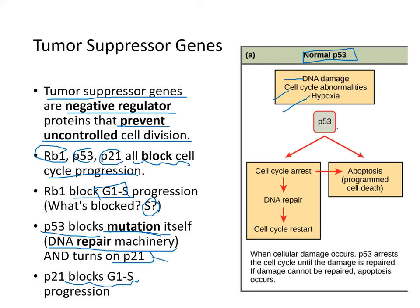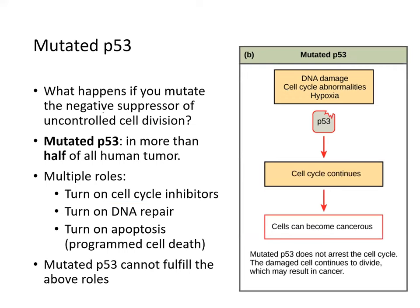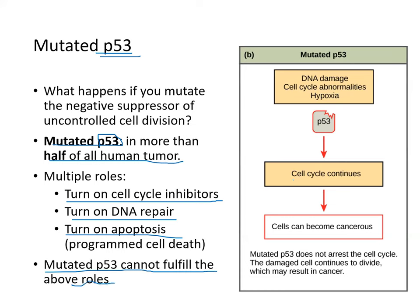P53 causes cell cycle arrest. If DNA damage is detected, it brings in the DNA repair machinery and the cell cycle can restart. If the damage cannot be repaired, P53 programs apoptosis — cell death. If P53 itself is mutated, it appears in more than half of all human tumors because it has multiple roles: activating cell cycle inhibitors like P21, turning on DNA repair, and initiating apoptosis. A mutated P53 cannot fulfill any of those roles, so the cell cycle continues and the cell becomes cancerous.